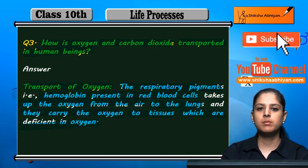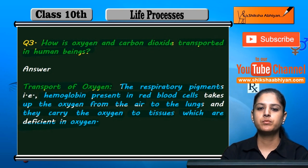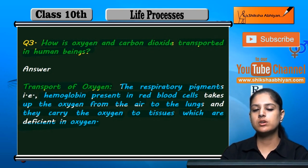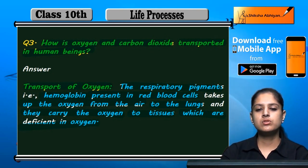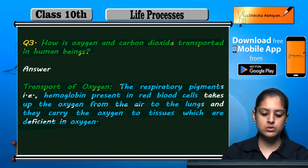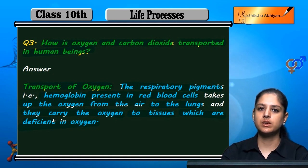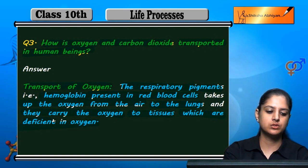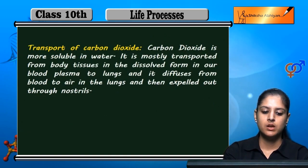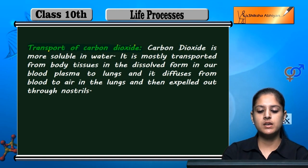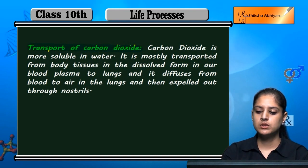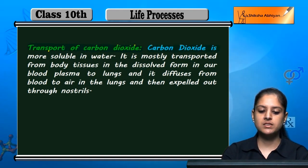Hemoglobin is present in red blood cells and transports oxygen to the tissues which are deficient in oxygen. Now let's look at the transport of carbon dioxide.